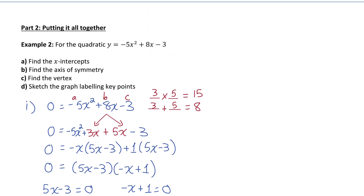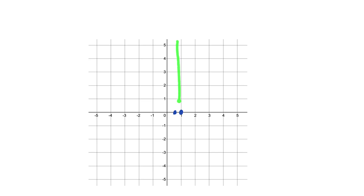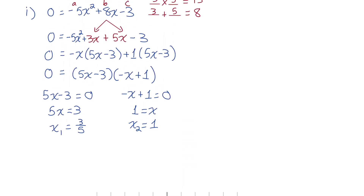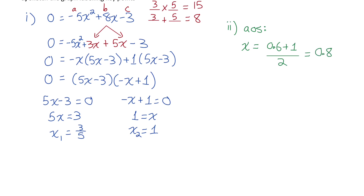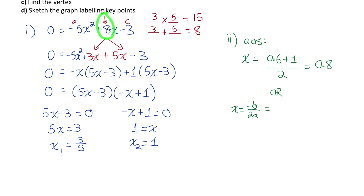For part b, finding the axis of symmetry: it will be right in the middle of those two x-intercepts. I average 3/5 (0.6) and 1, adding them and dividing by 2. 1.6 divided by 2 is 0.8. We could also use the formula x equals negative b over 2a: negative 8 divided by 2 times negative 5 gives negative 8 over negative 10, which is again 0.8, right in the middle of 0.6 and 1.